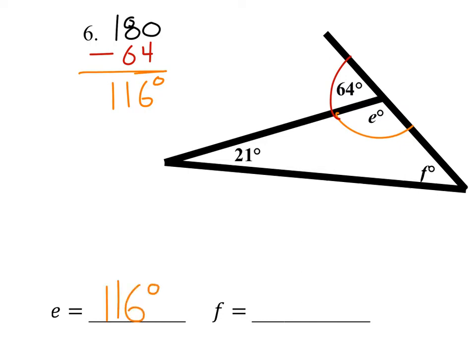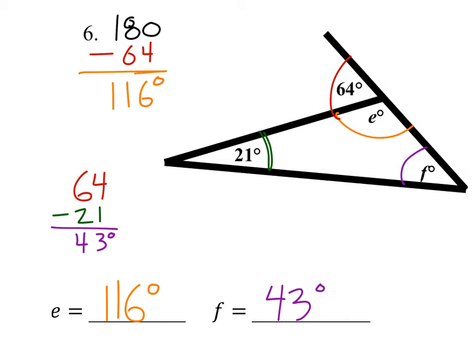Angle F — we could either use the three angles in the triangle to solve for F, or if you wanted to, you could use the alternate exterior angle relationship. That means we take the 64 degrees, and we know that this 21-degree angle plus angle F is 64. So we subtract 21 from that, which gives us 43 degrees. Just to confirm, you could also use the triangle angles: take 180 and subtract the 116 and the 21 — and we still get 43 degrees.